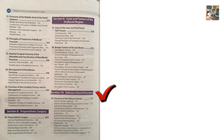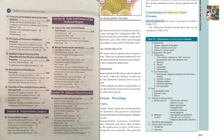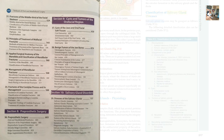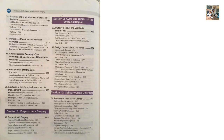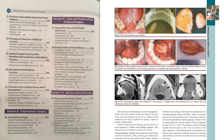Section 10: Salivary gland disorders. Short note topics include the composition of saliva, general and etiological classification of salivary gland disorders — remember the full table. Short notes: sialolithiasis, pleomorphic adenoma, Warthin's tumor, and mucoepidermoid carcinoma.